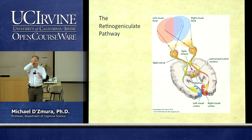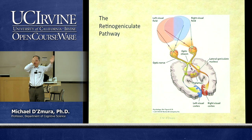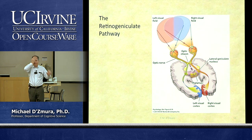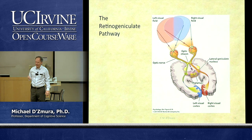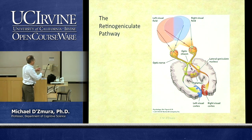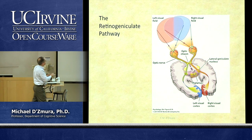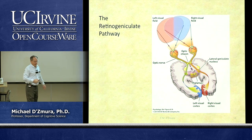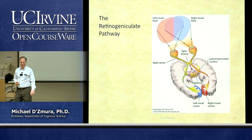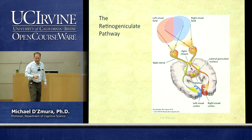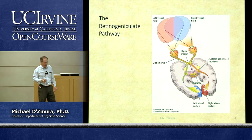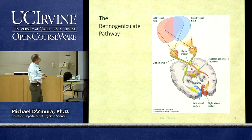The same principle applies to the other eye: all axons responding to one side of the visual field must cross. All axons responding to the other side are already on the correct side. This crossing is known as the optic decussation — where fibers cross in the optic nerve — giving us contralateral organization and contralateral processing of visual information.